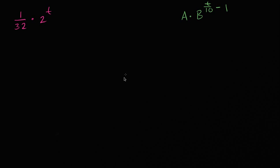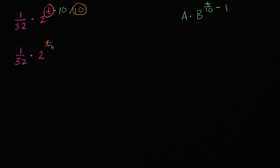So let's try to do it together. The first thing I want to do is take this t and get it into a t over 10. To do that, we essentially just need to multiply by 10 and divide by 10. So we can rewrite this as 1/32 times 2 to the t over 10 times 10.